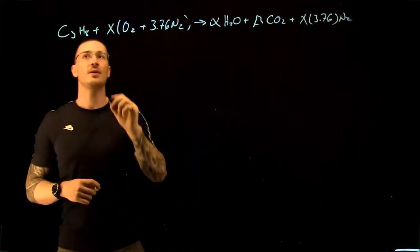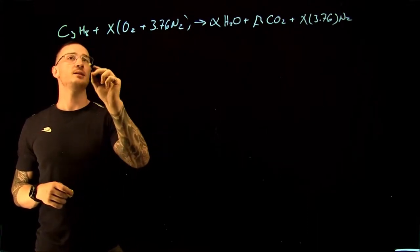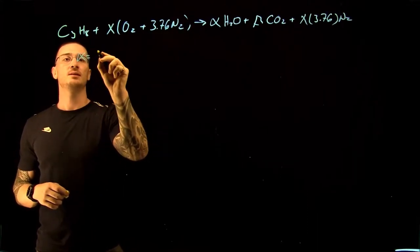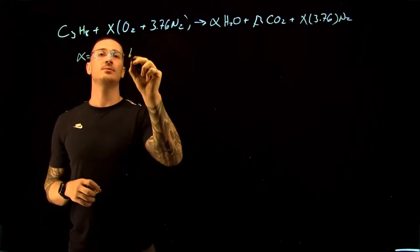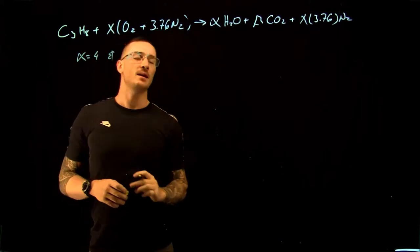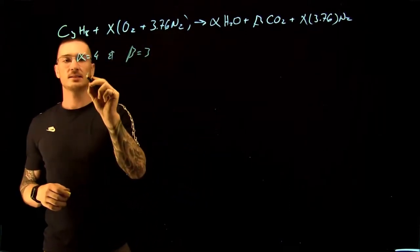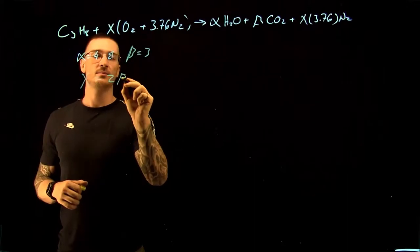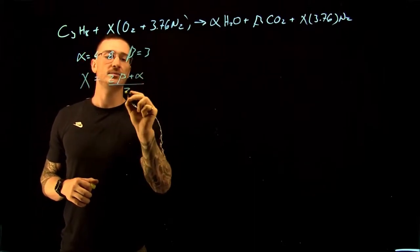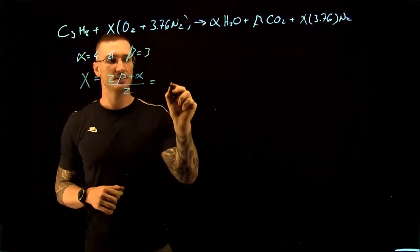We know that alpha is going to be equal to 8 divided by 2. So alpha is equal to 4. And our beta is equal to 3. And then we get that X is equal to 2 times beta plus alpha divided by 2. And this gives us 5.